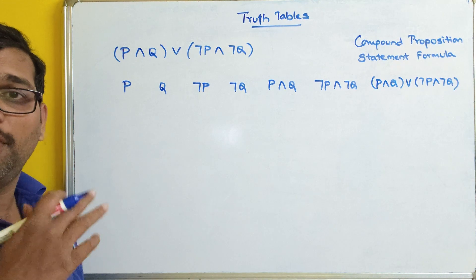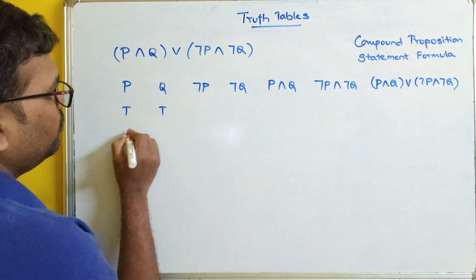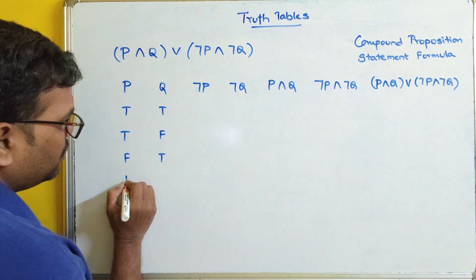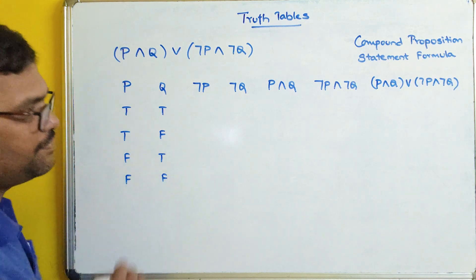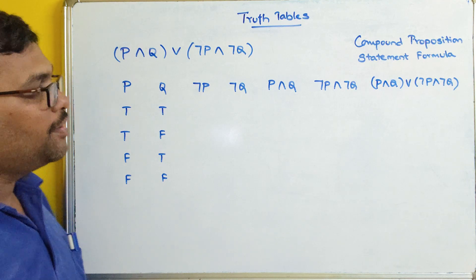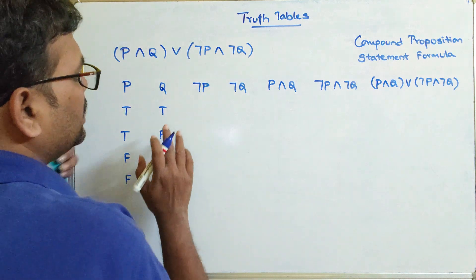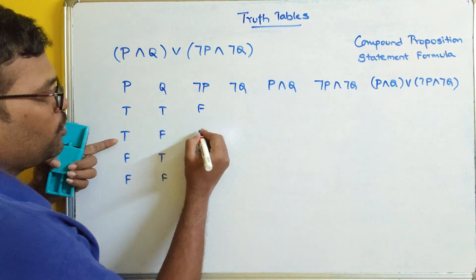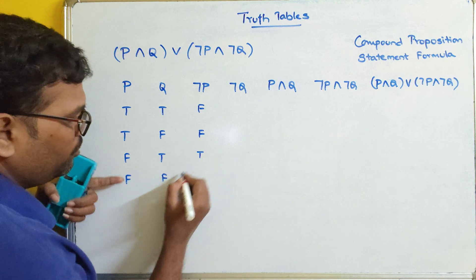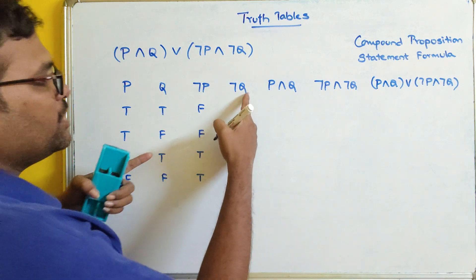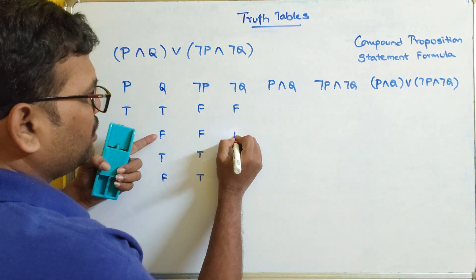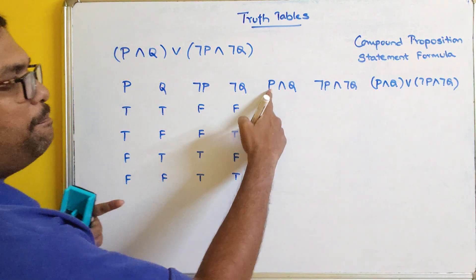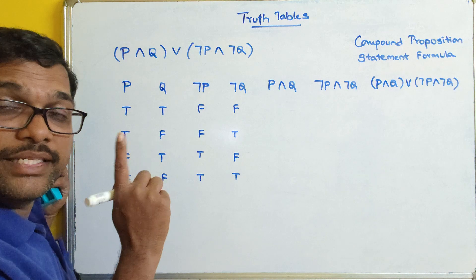With two propositions, there are four combinations: T/T, T/F, F/T, F/F. Negation of P: false, false, true, true. Negation of Q: false, true, false, true. P ∧ Q is a conjunction — both true gives true, otherwise false: T, F, F, F.